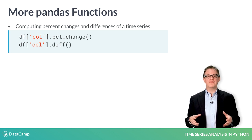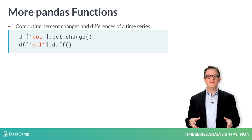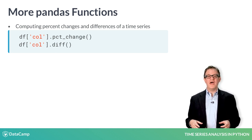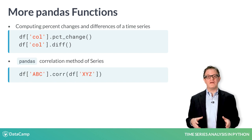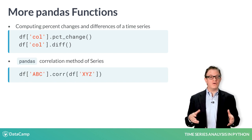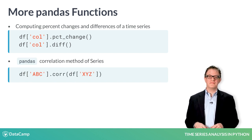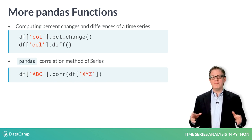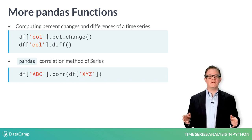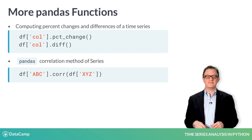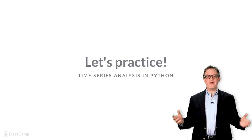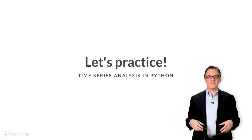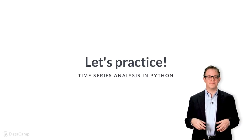You can compute the correlation of two series using the corr method, and the autocorrelation using the autocorr method. You'll learn more about these methods later in this chapter. Now let's practice using a few of these time series tools.